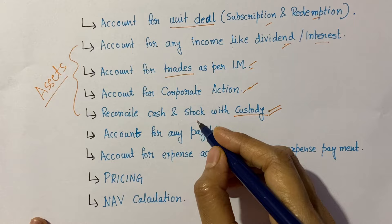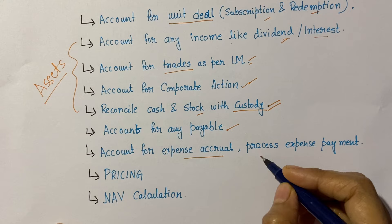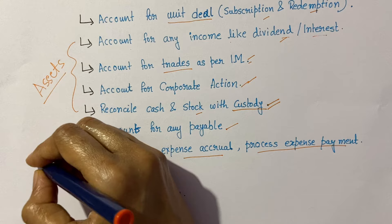Other components we need to check are payables into the fund, expense accrual checks, and processing any expense payments in the fund. These two components — payables and expense accruals — go toward the liability side.